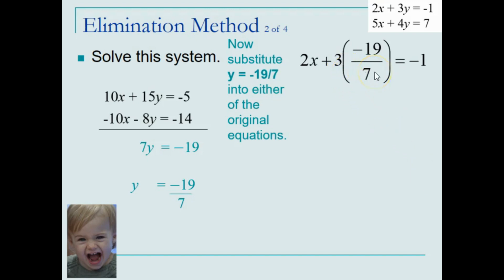First step, we need to multiply, giving us the following results of 2x plus negative 57 over 7.